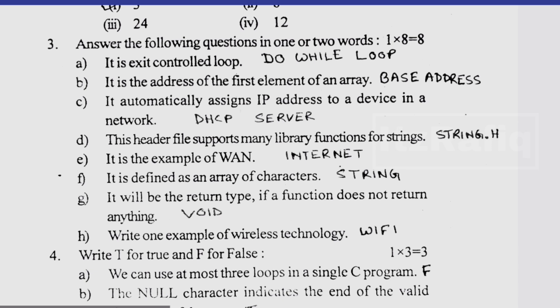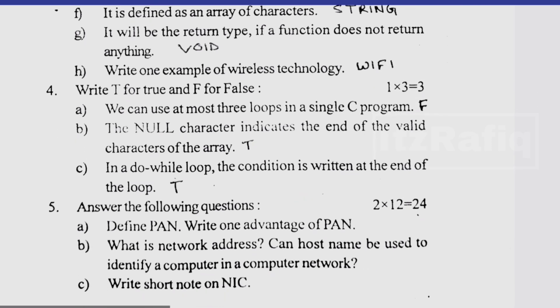It defines as an array of characters, string. It will be return type if the function does not return anything, it is void. One example of wireless technology, Wi-Fi. Then true and false. We can use most three loops in a C program, it is false, we can, there is no limit of loops in a C program.